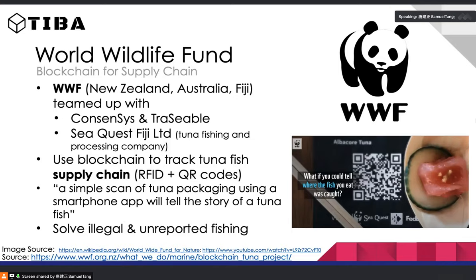WWF teamed up with ConsenSys and others to use blockchain for supply chain tracking — specifically, tracking tuna fish. They use RFID (radio frequency identification) and QR codes. Scanning a QR code on tuna packaging with a smartphone app tells you exactly where that fish came from. This has also helped reduce illegal and unreported fishing, because each fish must be identifiable. They are working to scale this up to other food products.